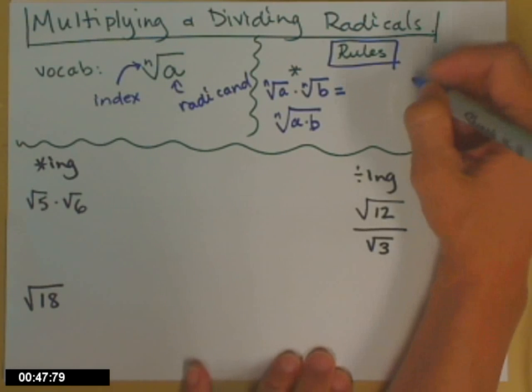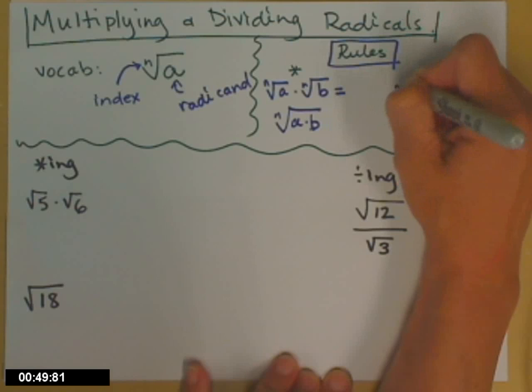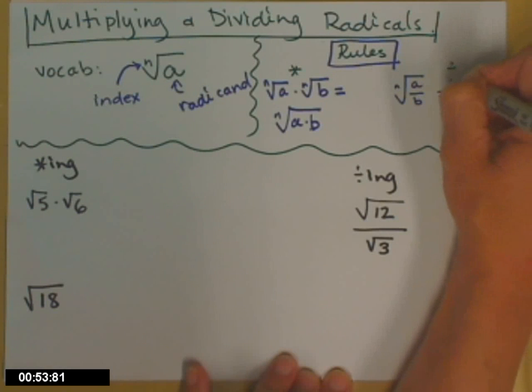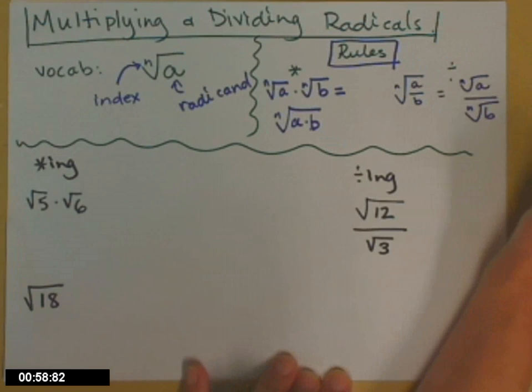Same thing for dividing. The division rule is, if you have the nth root of a fraction, you can split that up into the nth root of the top, divided by the nth root of the bottom. And again, you can go both ways.